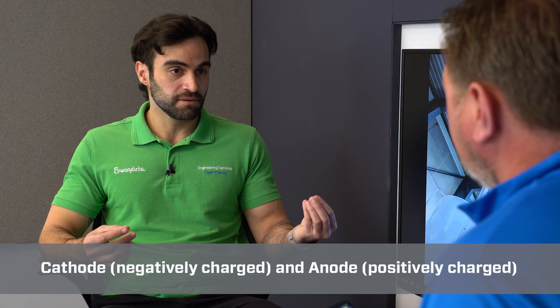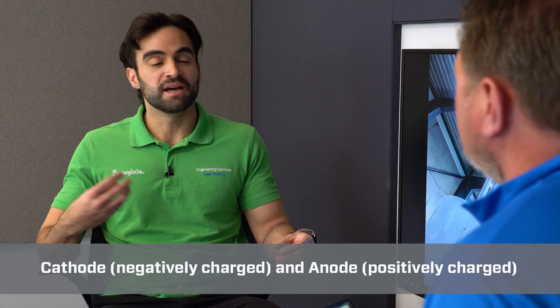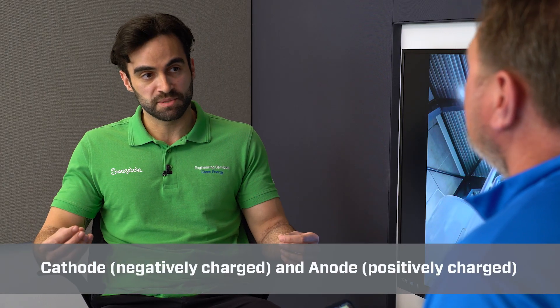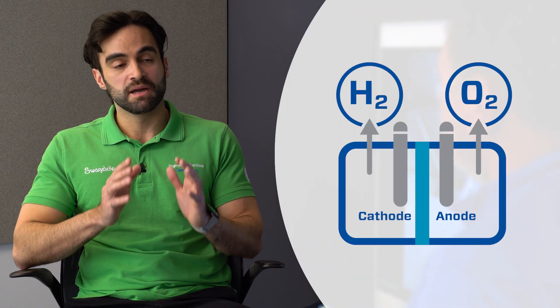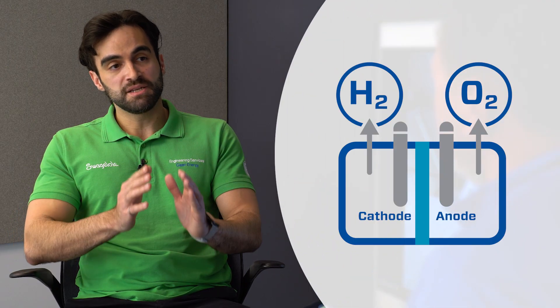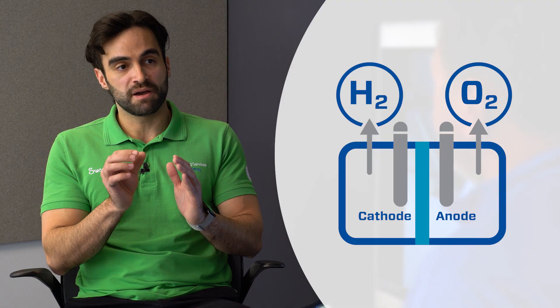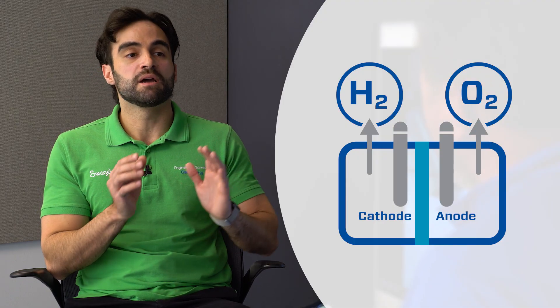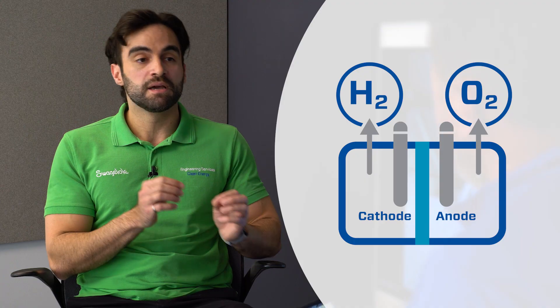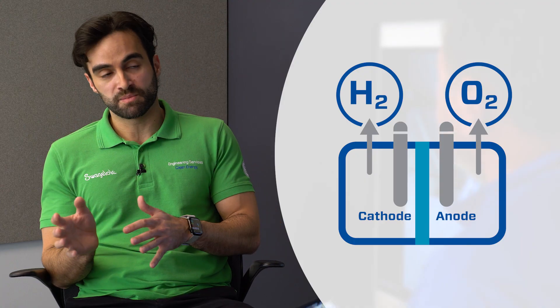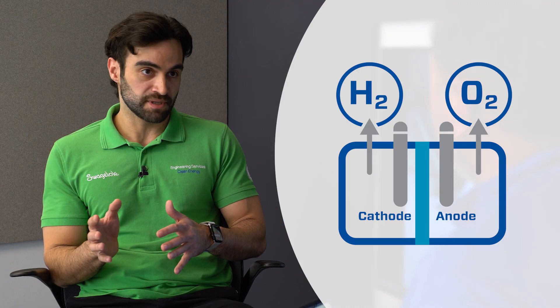If we look at an electrolyzer, it has two compartments. Each compartment has an electrode — the cathode, which is negatively charged, and the anode, which is positively charged. And depending on the type of the electrolyzer, these two compartments are split using a different type of membrane. It could be a porous diaphragm or it could be a polymer membrane, depending on the type of the electrolyzer.